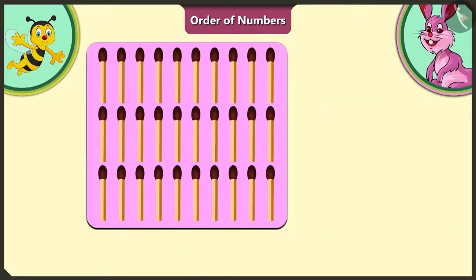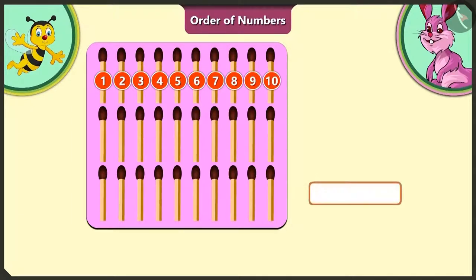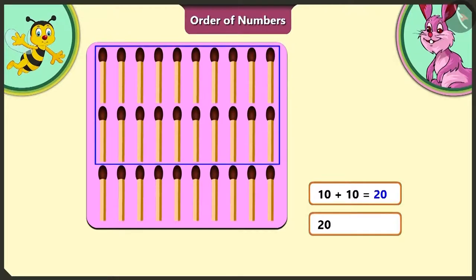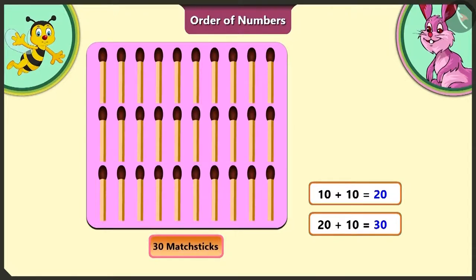And the matchsticks on the pink card? Oh yes, the first group on the pink card has 1, 2, 3, 4, 5, 6, 7, 8, 9, 10 matchsticks. To this first group, if we add the next group, the total number of matchsticks will be 20. To this 20 matchsticks, if we add the next group, we get 30 matchsticks. That means the pink card has 30 matchsticks in all.